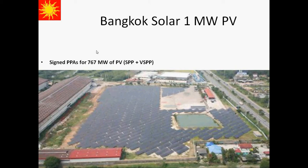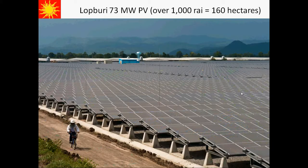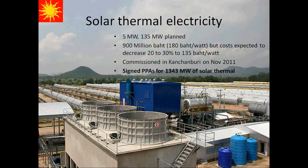For scale, a six-lane highway is shown on the far right-hand side. This is an even larger project — 73 megawatts of PV spread over 1,000 rai, or about 160 hectares. A lot of the power purchase agreements signed were actually for solar thermal, with signed PPAs for over 1,300 megawatts of solar thermal electricity. This is the first solar thermal project built under the VSPP program — 5 megawatts, with another 135 megawatts planned. It was commissioned last year about this time.